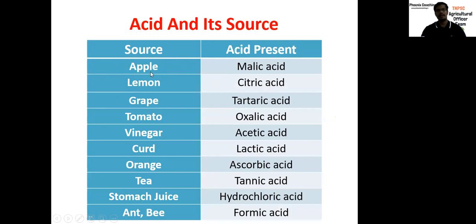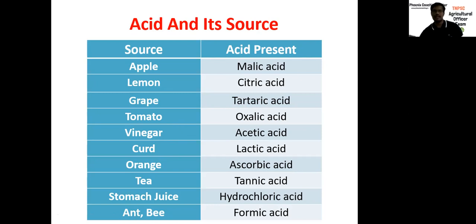Apple is a source of malic acid. Lemon and orange are citric acids. Grape contains tartaric acid. Tomato contains oxalic acid. Vinegar contains acetic acid. Lactic acid is present in curd and tea contains tannic acid. For our digestion process, hydrochloric acid is very important. And in bees, formic acid is present.